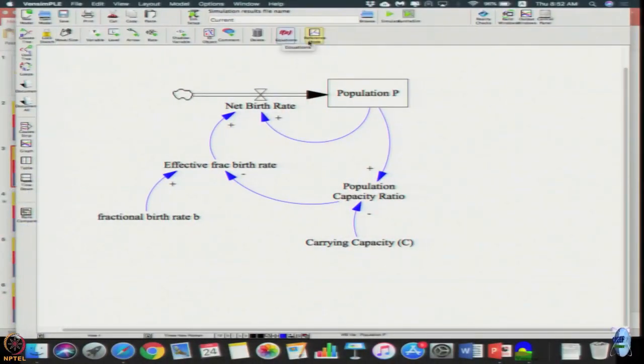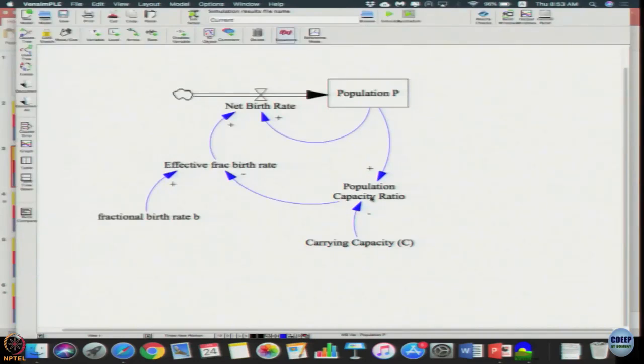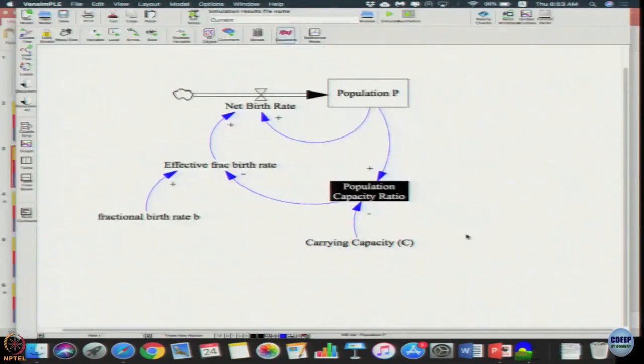First, whenever you get such models, you click the equation and try to understand what is the underlying equation. Open population - it's a level and its initial value is 2. Carrying capacity means its value is 1000. Population by capacity ratio is defined as just population divided by carrying capacity.